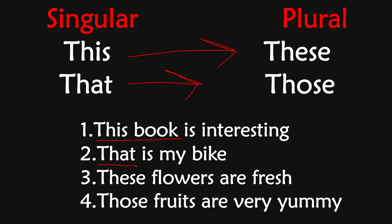These flowers are fresh — these is the plural form of this, so these is the demonstrative adjective in this sentence. Those fruits are very yummy — those is the demonstrative adjective in this sentence. So let's learn what is next — interrogative adjectives. Interrogative adjectives are the words that are used to modify the noun in an interrogative form. The important words are: whose, which, what. For example: whose pen is this — whose is the interrogative adjective. Which way did he go — which is the interrogative adjective. What subjects do you learn — what is the interrogative adjective. Which book is yours — which is the interrogative adjective. What time is it now — what is the interrogative adjective.